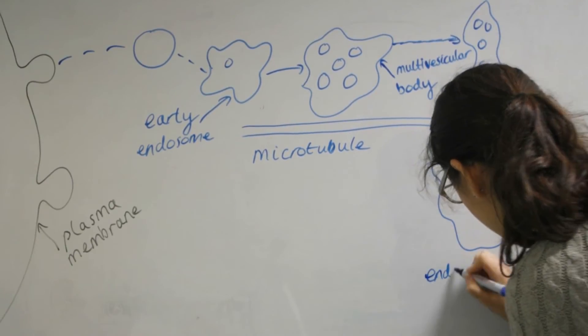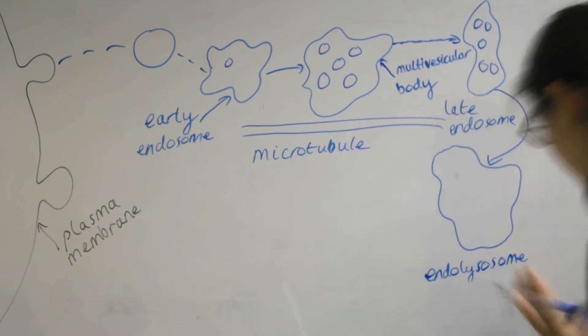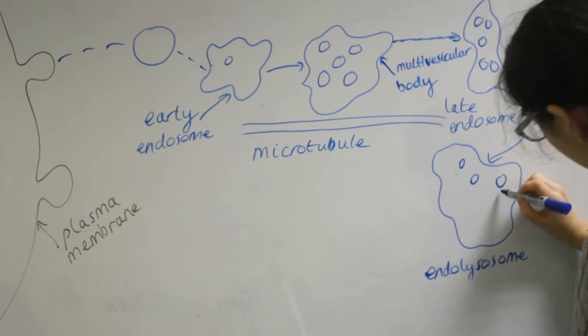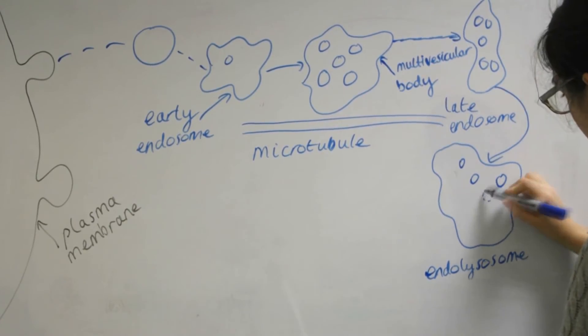When this late endosome reaches the lysosome it will fuse with it forming an endolysosome. The intraluminal vesicles are then released inside the lysosome and are degraded by the acid hydrolase enzymes.